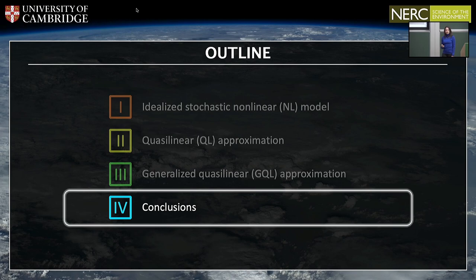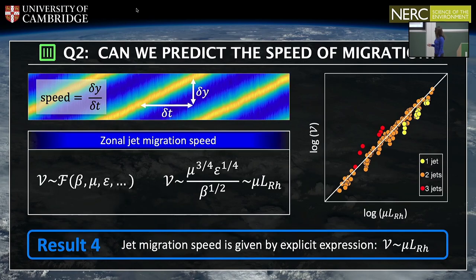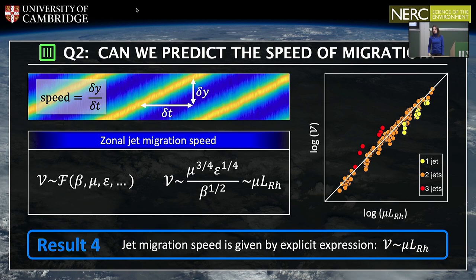Audience member: Is that equivalent to the migration speed being inversely proportional to zonostrophy? You could write it as mu times L_beta divided by zonostrophy, so small zonostrophy jets go faster than large zonostrophy. Laura: There was no explicit connection between zonostrophy and migration speed in my formula — that's a very interesting insight, I hadn't thought about that. Thank you.